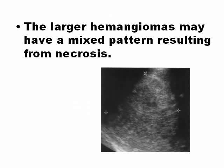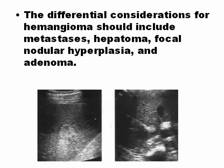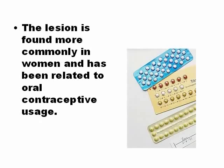Larger hemangiomas can have different patterns, though uncommonly; most are very benign. They may also present with calcification or a complex anechoic echo pattern. Liver cell adenoma is a benign neoplasm of the liver with only slightly atypical hepatocytes — essentially very normal-appearing hepatocytes.